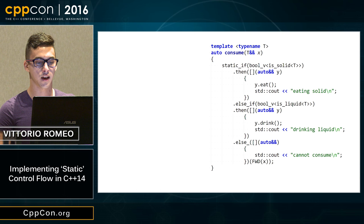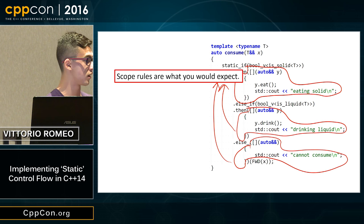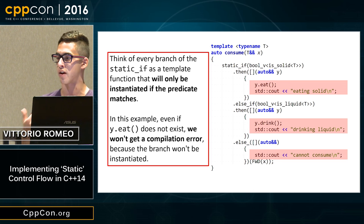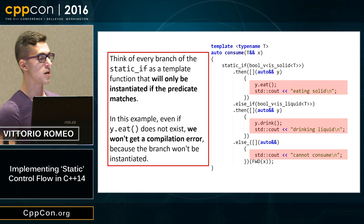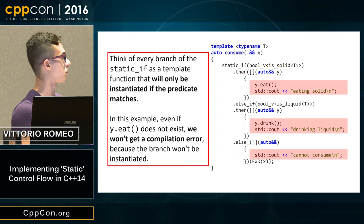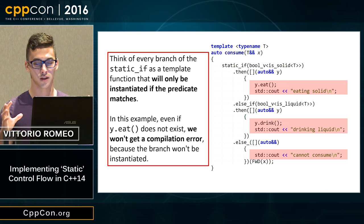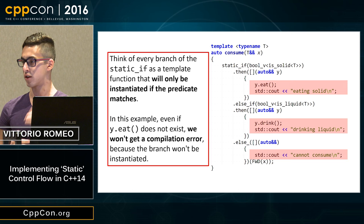The scope rules are what you'd expect because the lambdas restrict branching logic to their own scopes. Think of every branch as a template function that will only be instantiated if the condition matches. It doesn't matter if a method doesn't exist for the current type — we won't get a compilation error unless that branch is instantiated. You can think of this as linearly searching through template functions, taking the first match and instantiating it; otherwise, it's never instantiated.